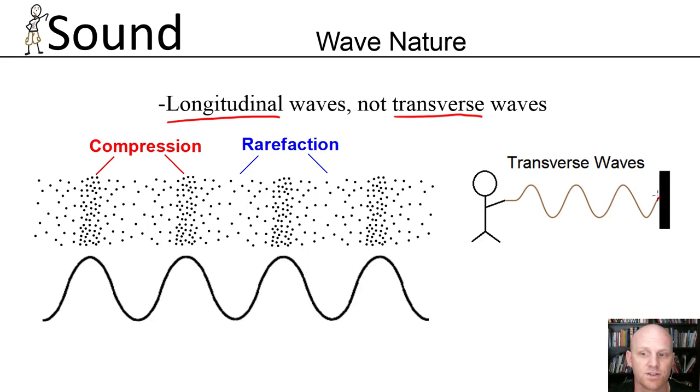A typical wave on a string is a transverse wave. If we fix one end of this string to a wall and at the other end we oscillate the string up and down, creating waves in the string. Those waves are going to propagate towards the wall, and when they hit the wall, they're going to reflect back.